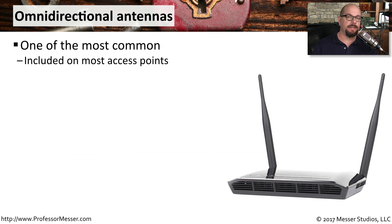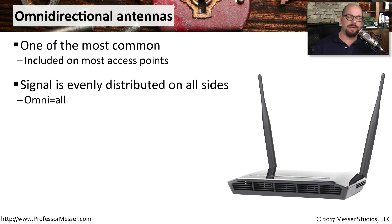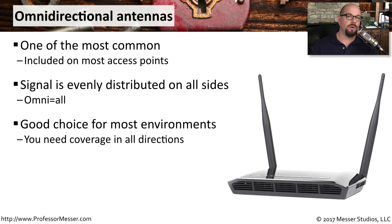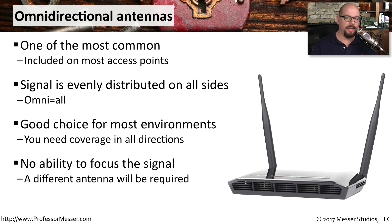There are many different types of antennas that you can connect to your wireless access points. One of the most common — and the one that probably came with your wireless access point — is an omnidirectional antenna. This means the signal will be distributed relatively evenly on all sides of the antenna. The omnidirectional antenna is a good choice if you want to put the access point in the middle and have everybody communicate to it from wherever they are. One challenge with an omnidirectional antenna is there's no way to focus the signal — if you need to go a longer distance, you'll need a different kind of antenna.